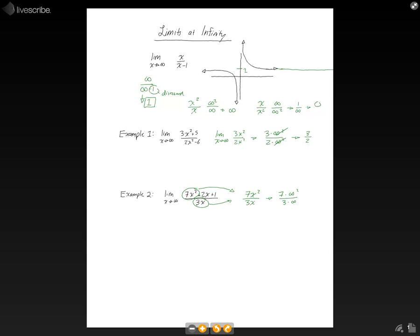You'll notice we can cancel an infinity on the top and on the bottom, and that will bring us to 7 times infinity over 3, which still means we have an infinity on the top, which means that the limit of this goes to infinity.